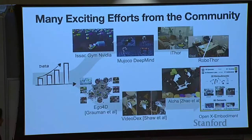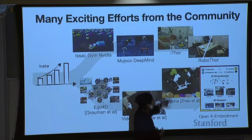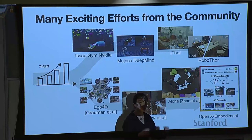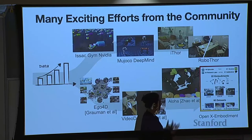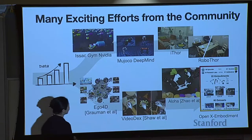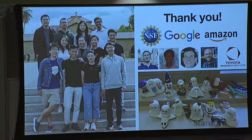With that, I want to thank all my collaborators and funding agencies, and most importantly, my students who make all these projects possible. I'm happy to take questions. And I want to just introduce this picture — this is actually a picture where every student makes a little toy for themselves. You can see this little robot has this gripper. And if you look carefully, you can see LLM planner, diffusion policy — they actually made different robots for their own research. That's a very cute photo.